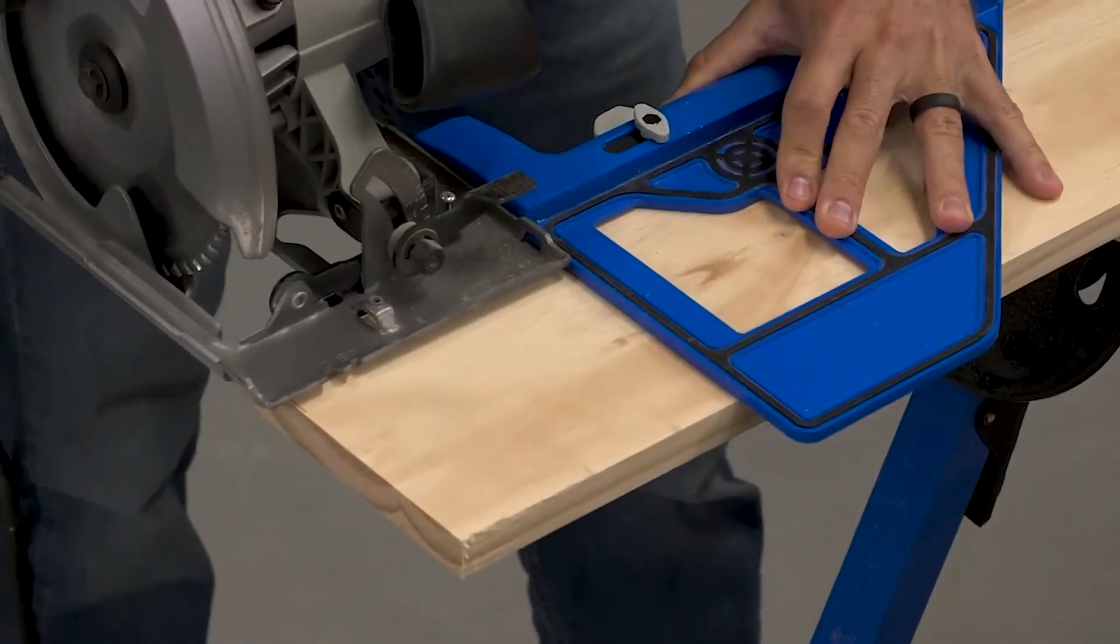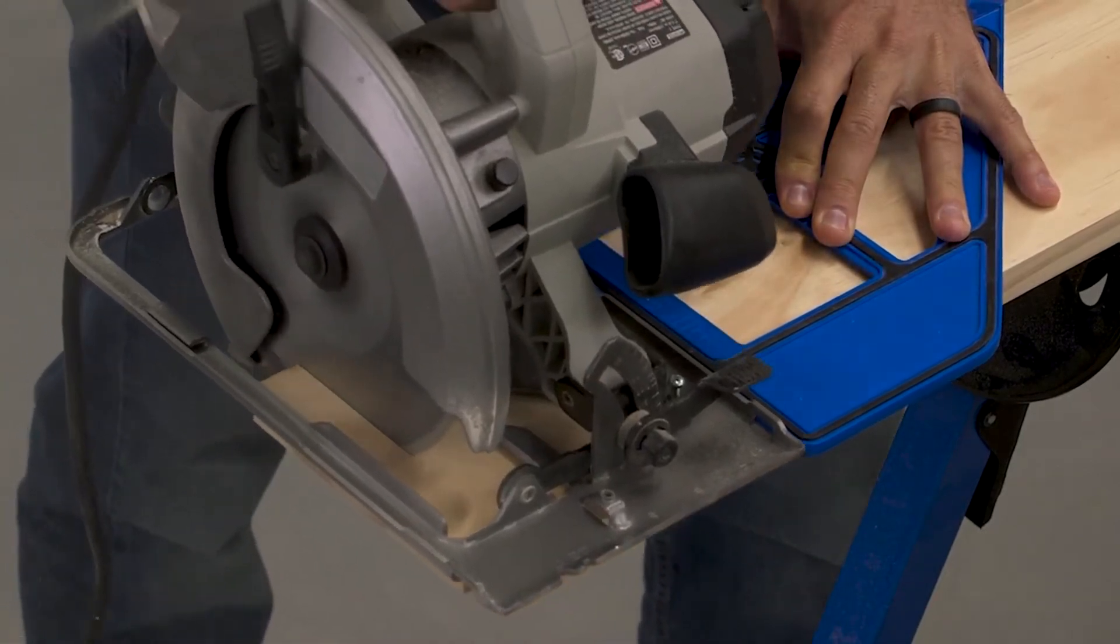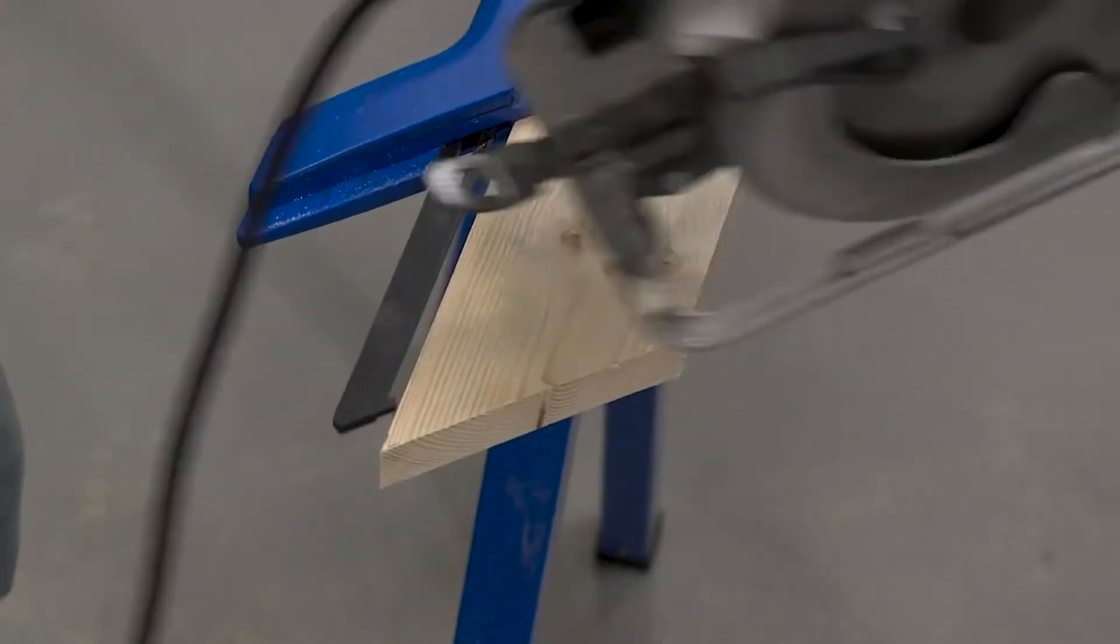You can cut boards up to eight inches wide with the portable crosscut and it works with just about any circular saw whether the blade is on the left or the right side of the saw.